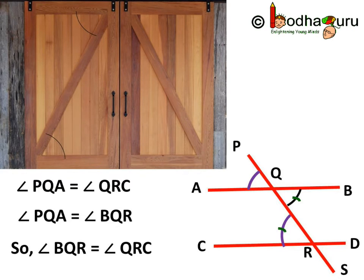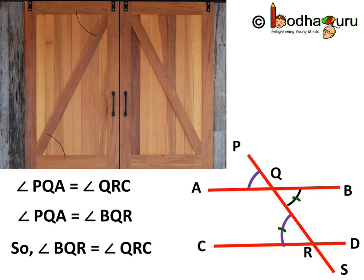From these two, we get angle BQR is equal to angle QRC. And these two are alternate interior angles.